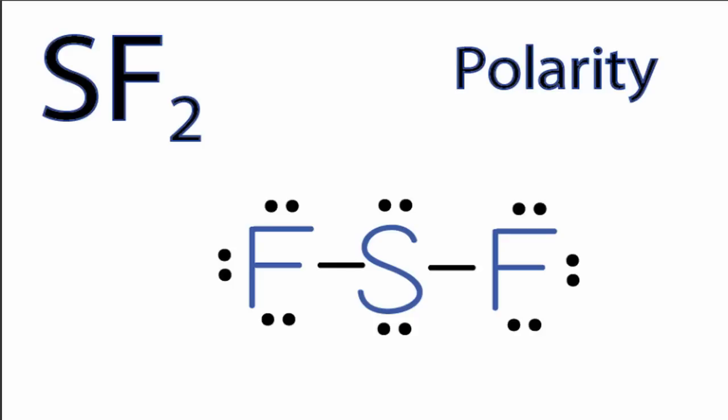According to valence shell electron pair repulsion theory, these fluorines and these two lone pairs of electrons are going to spread out, and when they do, they're going to give us some molecular geometry that looks like this.